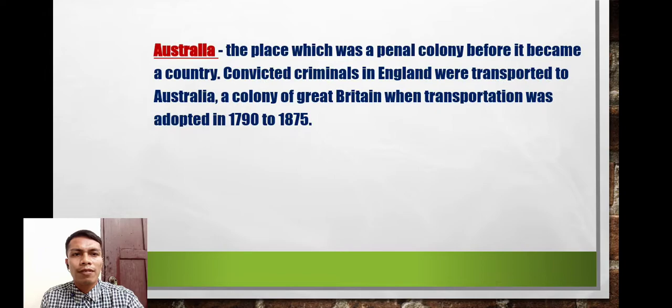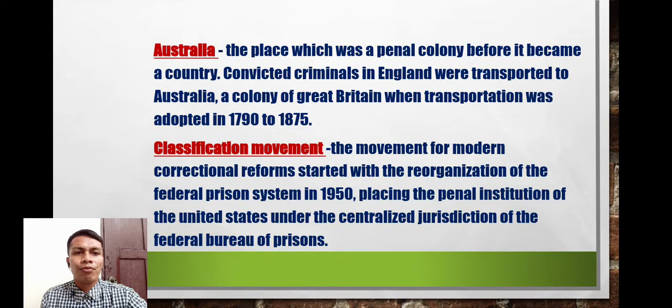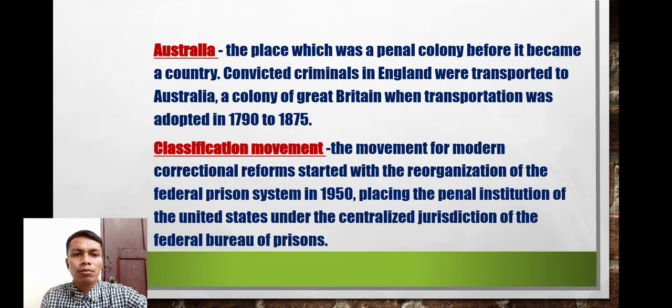Australia was a colony before it became a country. Convicted criminals in England were transported to the Australian colony of Great Britain when transportation was adopted from 1790 to 1875. The classification movement for modern correctional reform started with the reorganization of the federal prison system in 1950, placing penal institutions of the United States under the centralized jurisdiction of the Federal Bureau of Prisons.